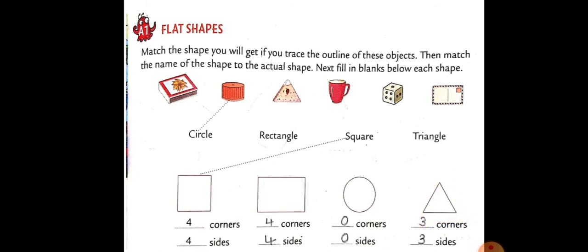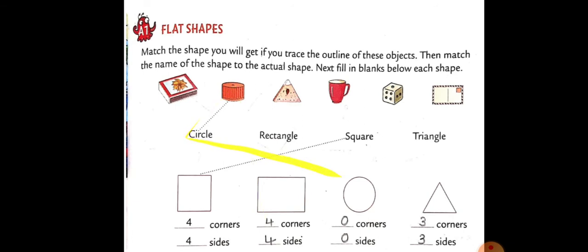Ab match karna hai. Yeh top hai, cap hai — toh yeh circle hai, aur circle ka match yahan pe hai. Aise karke match karna hai. Aapko match khud se karna hai. Par F bhi jo hai, woh fill karke nahin di hai. Yeh circle ko yahan se aise match karna hai.